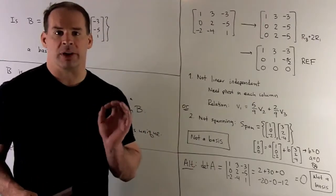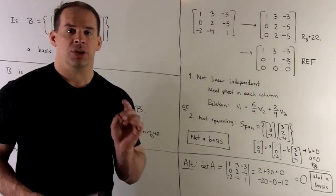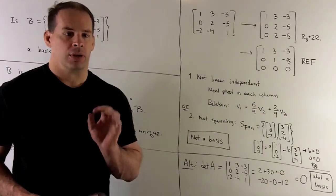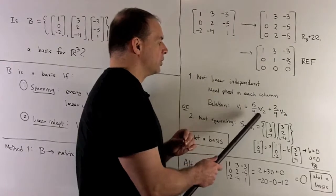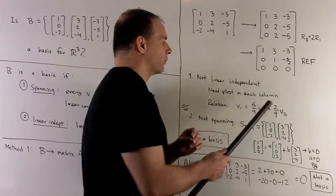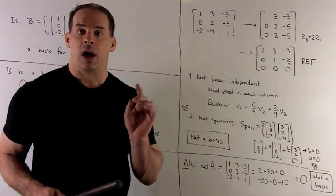There's a relation between V₁, V₂, and V₃. If you work it out, you'll find that V₁ equals 5/9 V₂ plus 2/9 V₃. You should verify that.